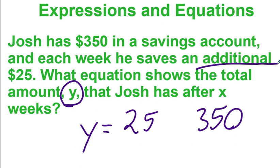The total amount y is what it equals. We have two numbers: 25 and 350. The word 'additional' tells us we're adding. The x has to be in there somewhere — one of those numbers gets multiplied by x because it says 'x weeks.'